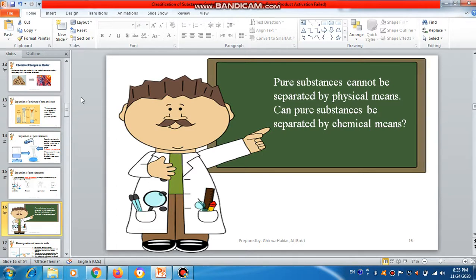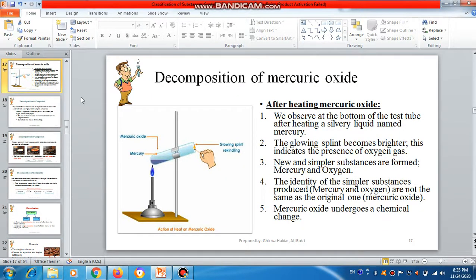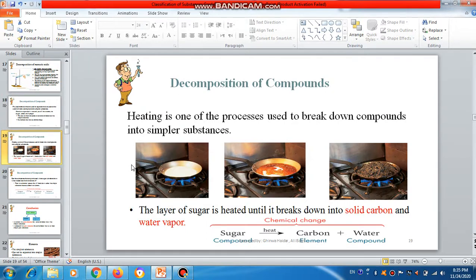We let them make chemical reactions to see if these pure substances will be decomposed or not. We did heating for mercury oxide which is a pure substance. We talked about the chemical reaction and how it becomes decomposed into mercury and oxygen.